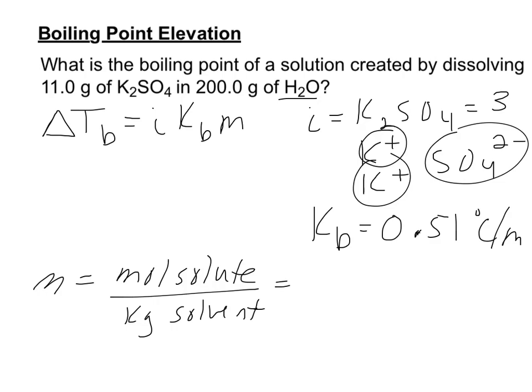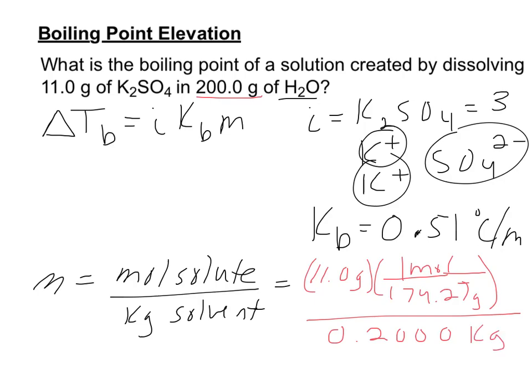We don't know moles of solute here. We just have that we have 11 grams of our solute. So, to calculate, we can take 11 grams of our solute, use the molar mass of our solute, K2SO4. The molar mass of our solute is approximately 174.27 grams per one mole of our solute. I'm going to leave off the K2SO4 labels, because we know we're dealing with just that one substance as far as my solute is concerned. So, moles of solute there, divided by kilograms of solvent. I have 200 grams of H2O, which is my solvent, so that gives me 0.2000 kilograms of my solvent.